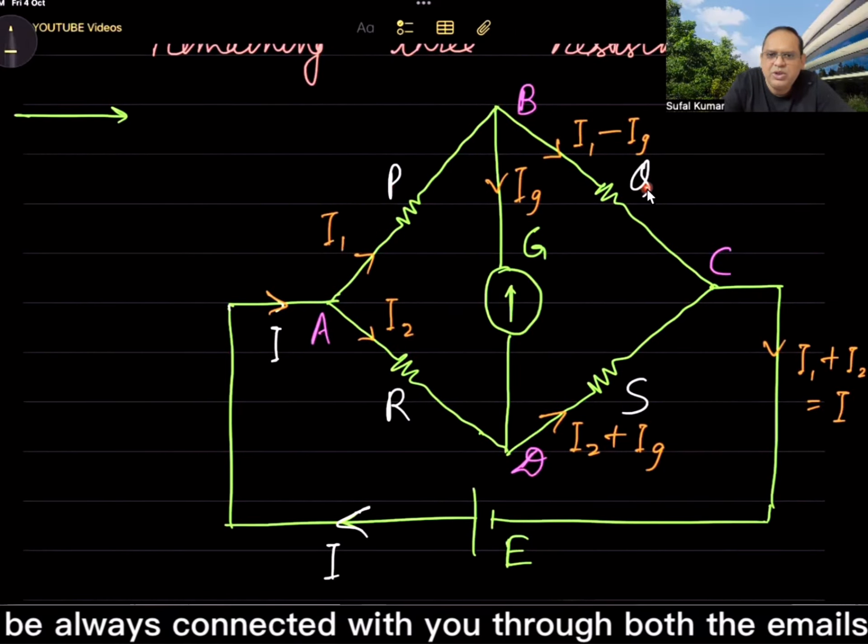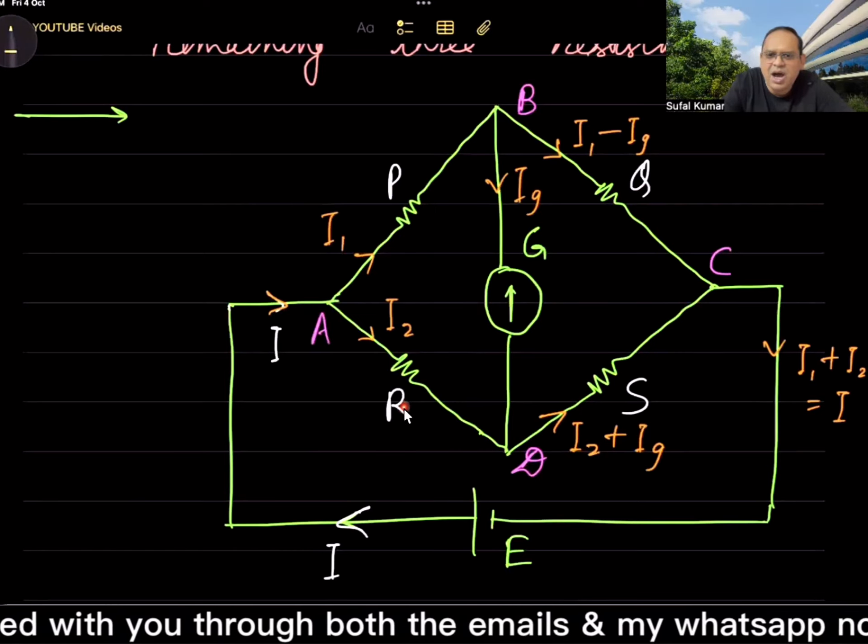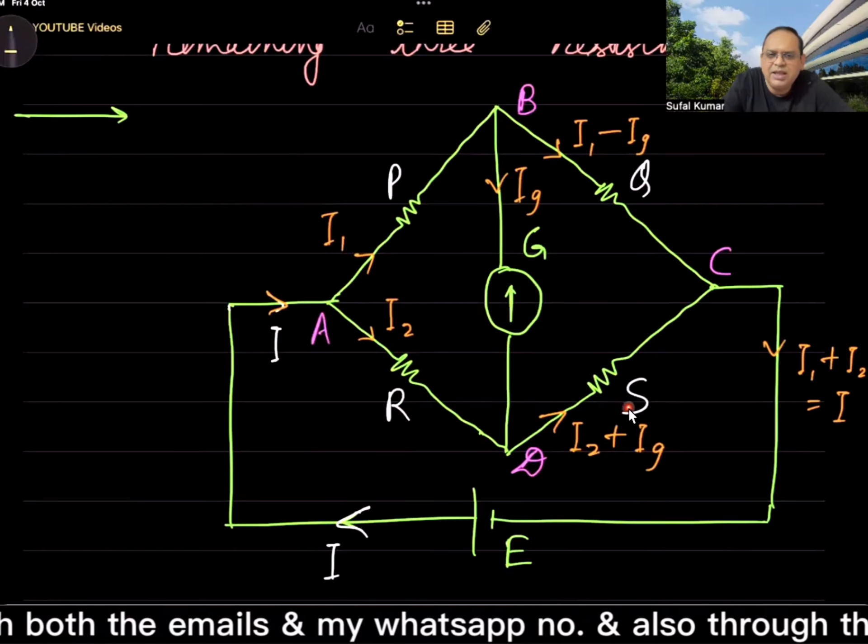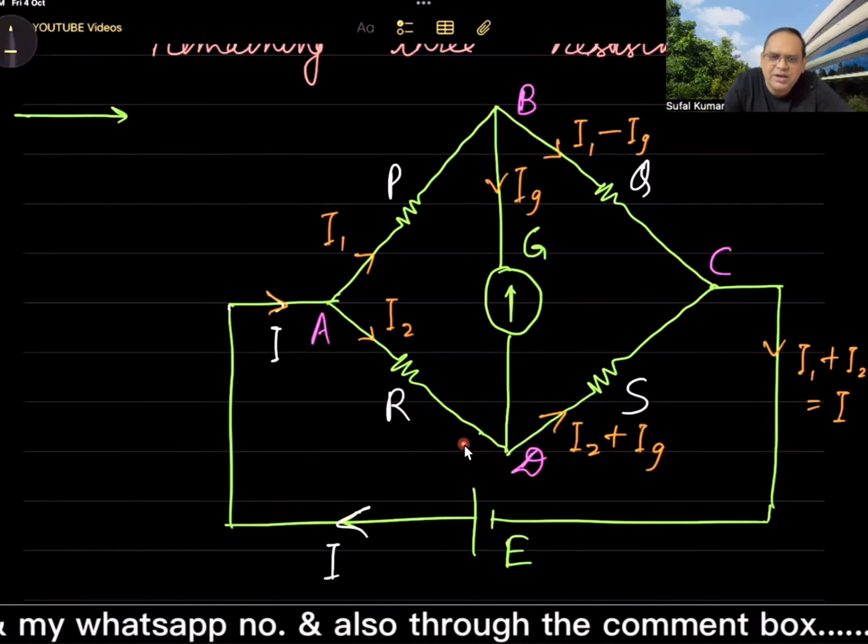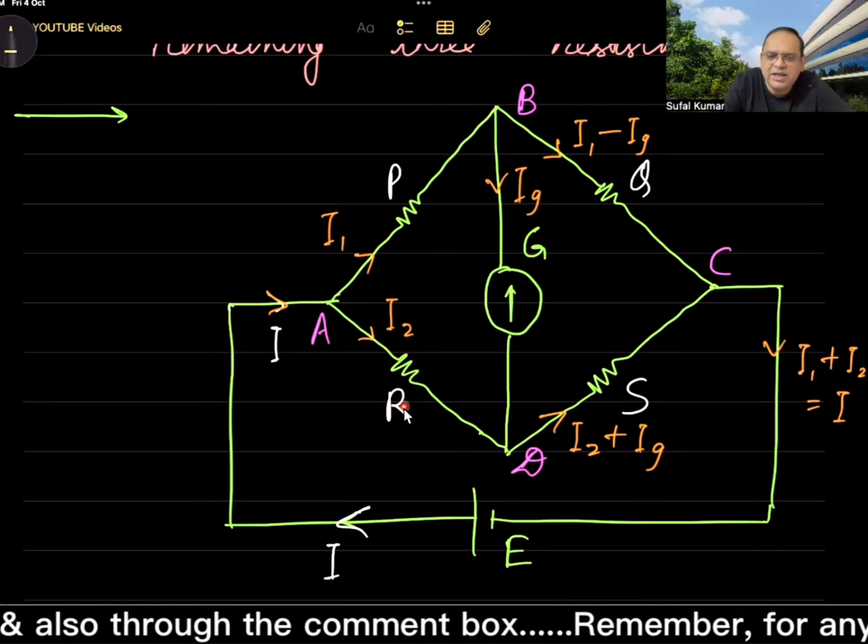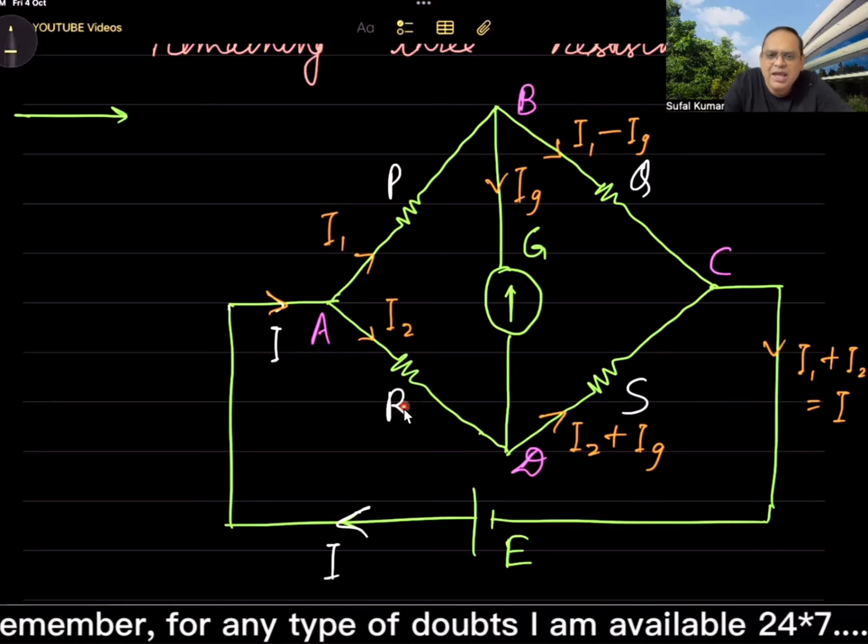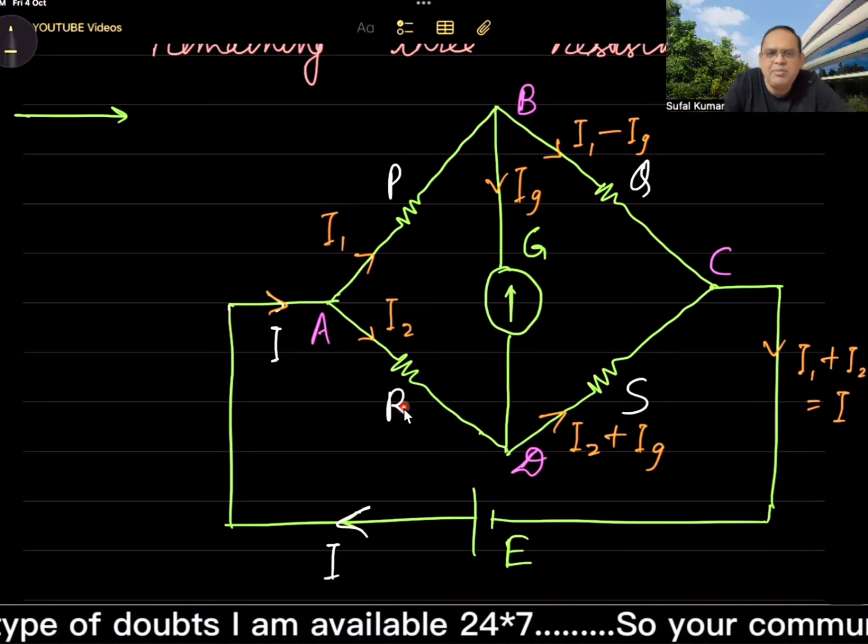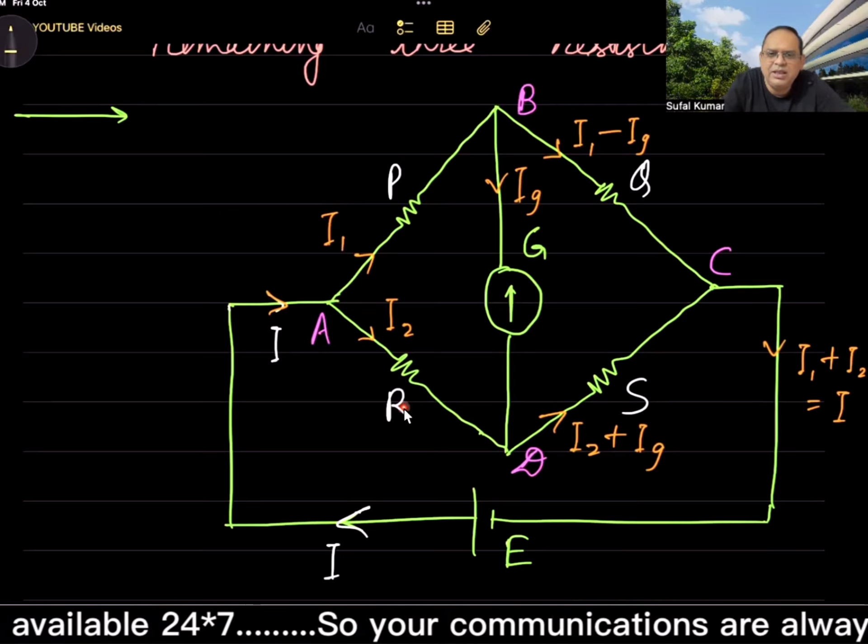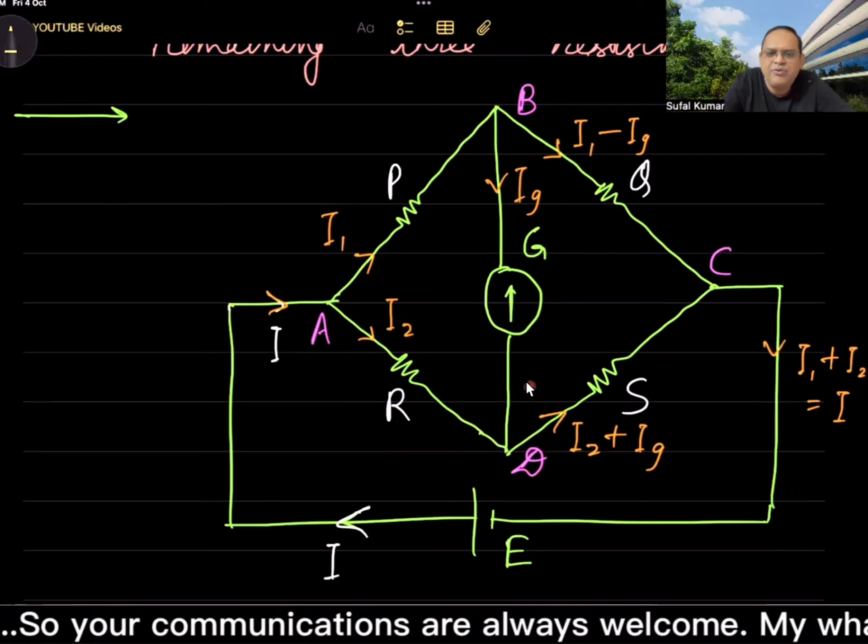In the given circuit, if galvanometer shows no deflection or Ig = 0, if galvanometer shows no deflection that means in this middle branch no current, that means Ig = 0. That's why I wrote Ig = 0 or potential difference between B and D is zero.